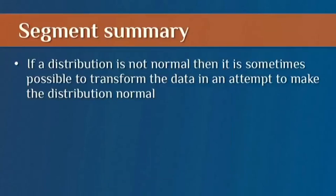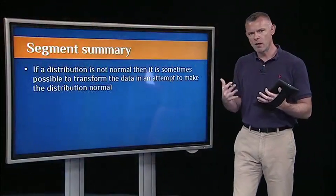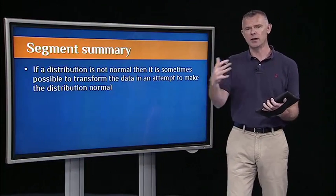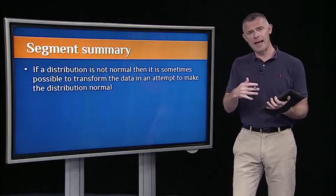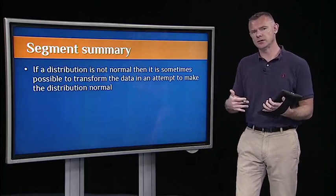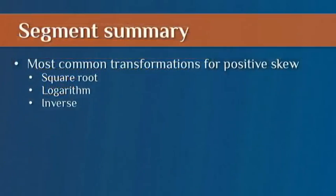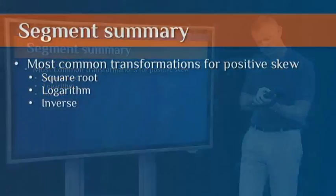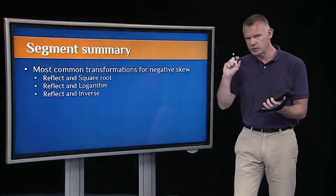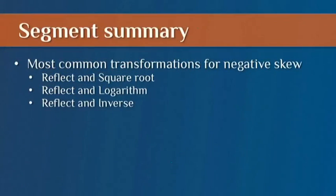To summarize this segment, often times you'll look at a distribution and see that you have a skew value greater than 3 or a kurtosis value greater than 10. You might want to apply a data transformation to see if you can make it look more normal, which will allow you to apply the statistical procedures that we've covered in this course. The most common transformations are the ones I showed you: square root, log, and inverse. For negative skew, you just reflect and then apply those same transformations.